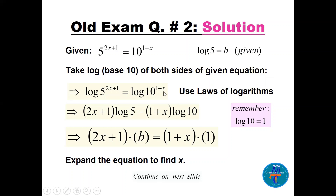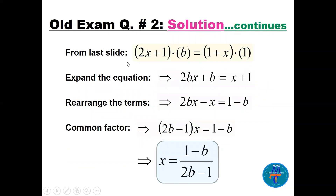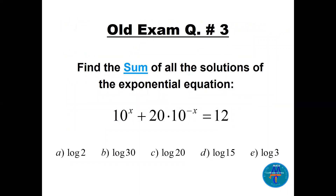Bringing the exponents down using log laws: (2x+1) times log 5 equals (1+x) times log 10. Since log 10 equals 1 and log 5 equals b, we substitute b. Expanding and rearranging — moving all x terms to one side — we get x times (2b minus 1) equals 1 minus b, so x equals (1 minus b) over (2b minus 1).